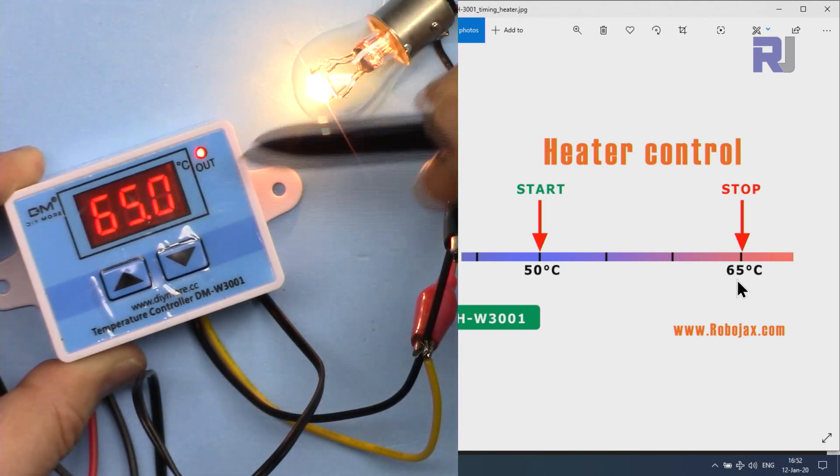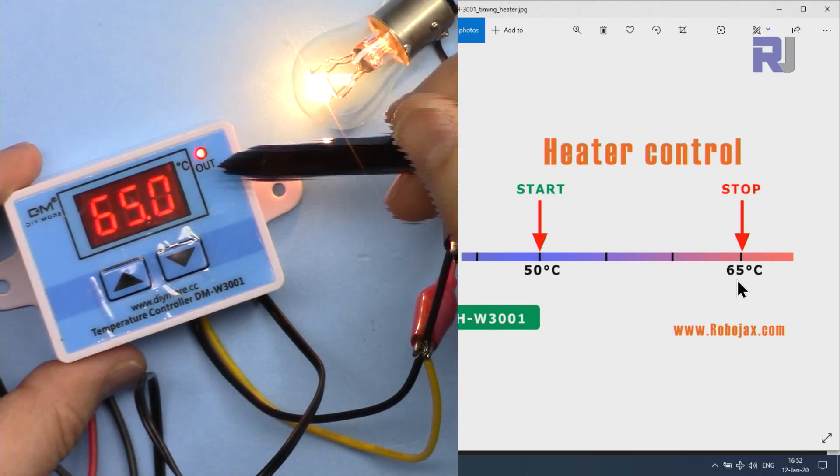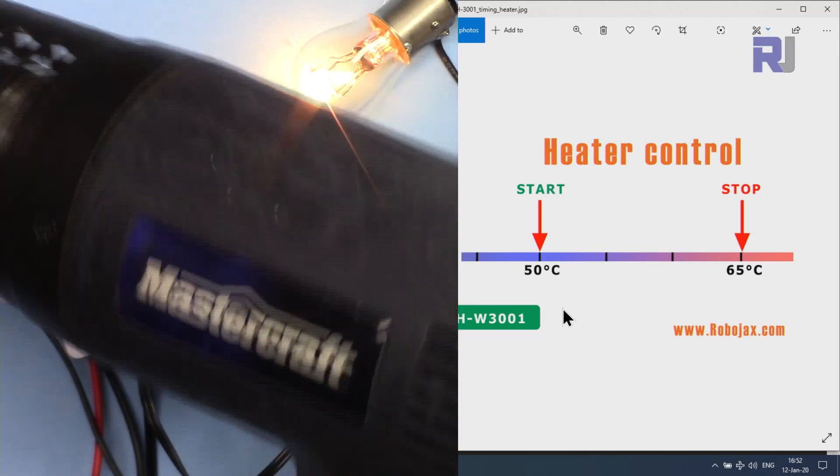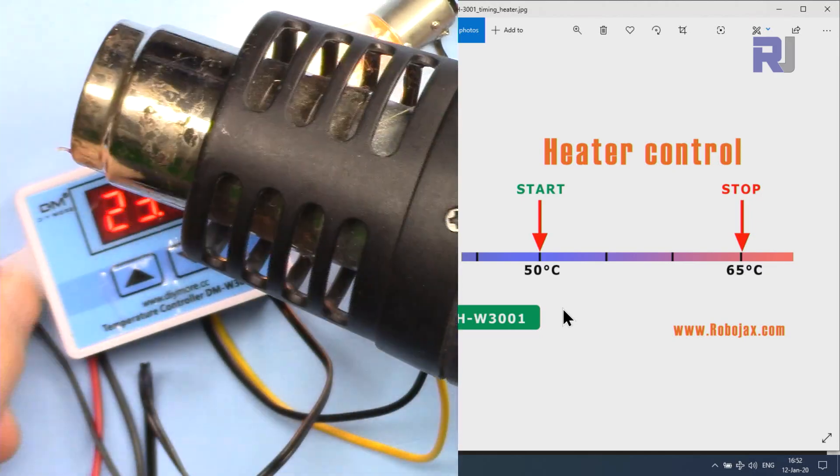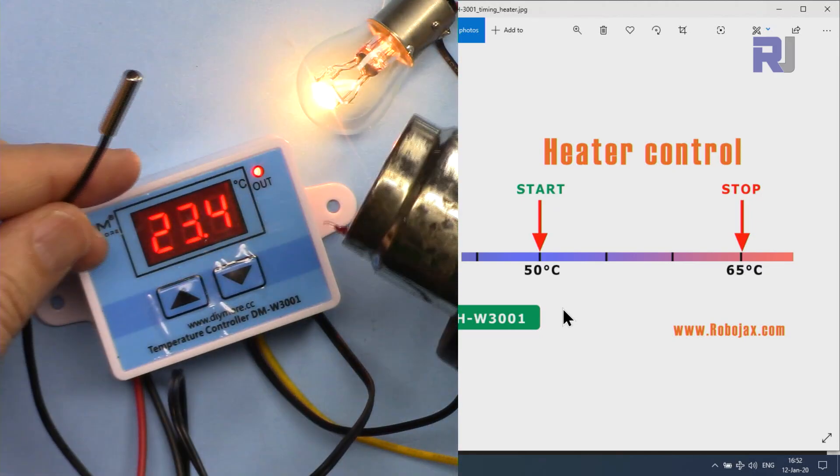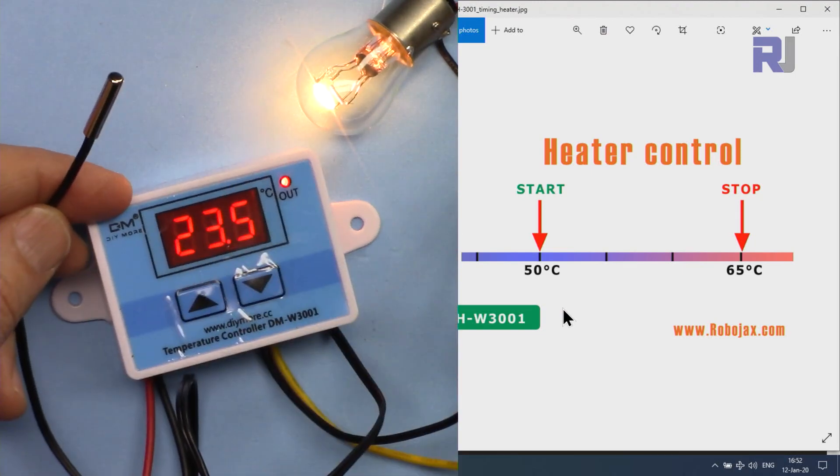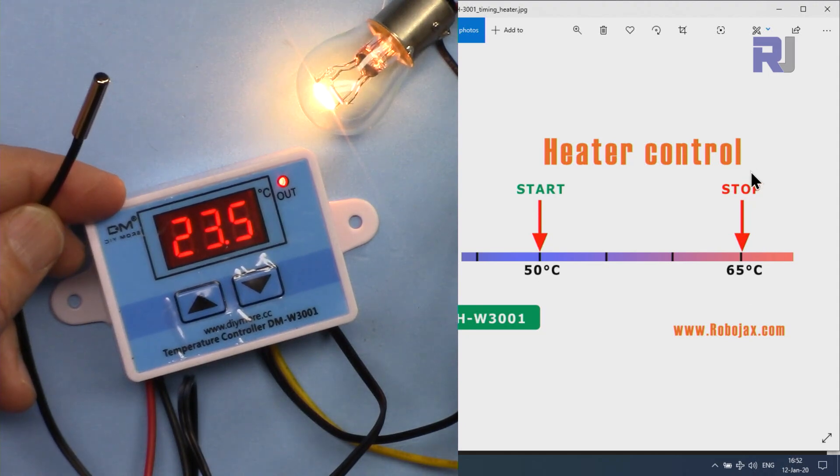As you can see the output is now on because the room temperature is below 50. Now I will be using my heat gun, this is a Mastercraft heat gun from Canadian Tire. I will apply heat. Pay attention here - when the temperature increases and reaches 65 it will stop.